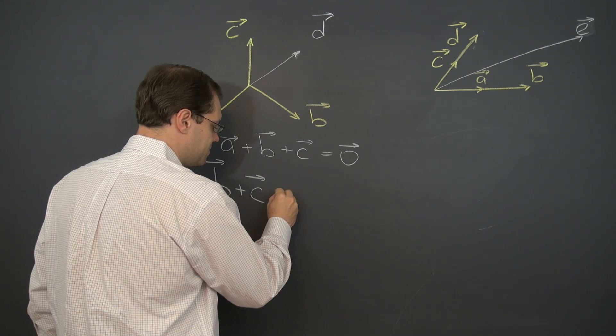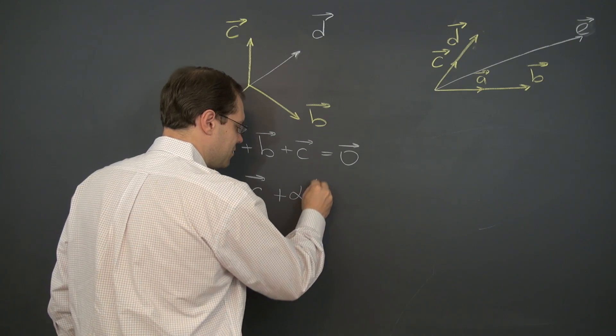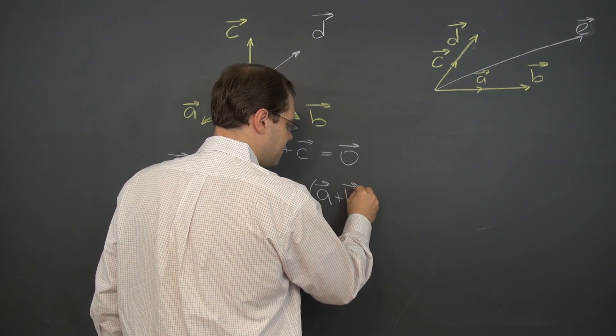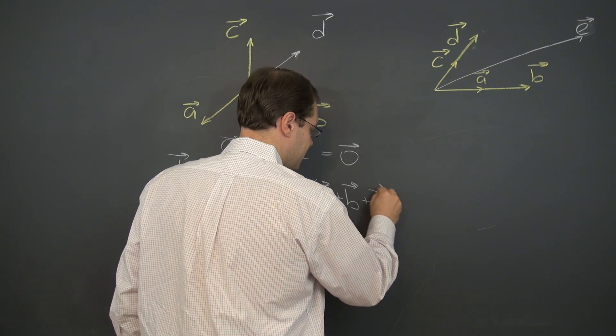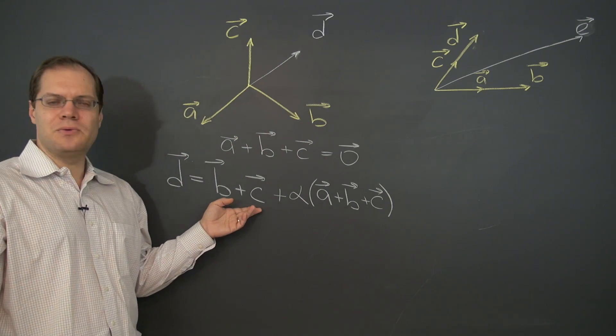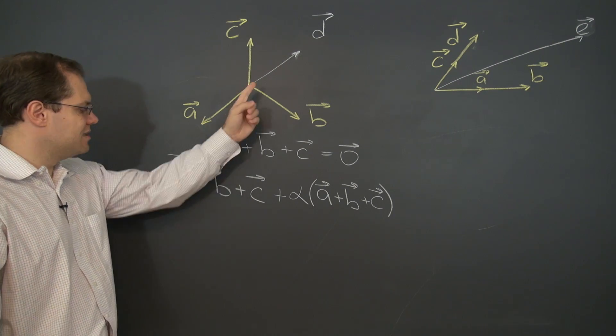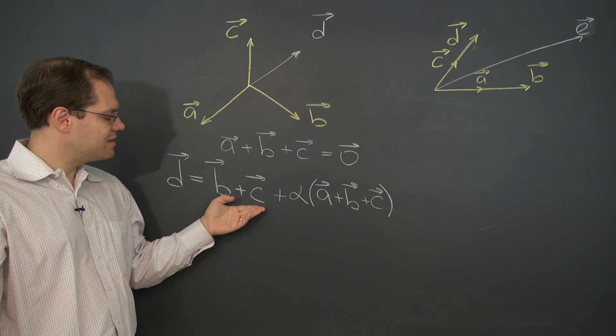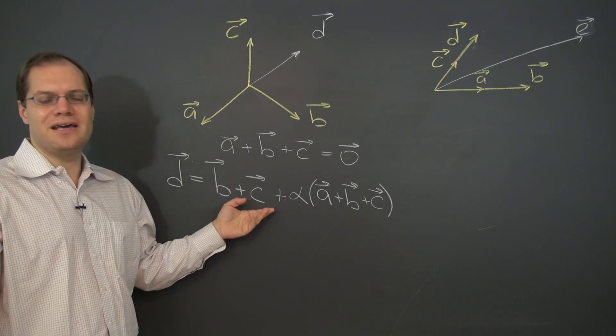And then you can throw in any amount of this fancy zero, a plus b plus c. And there you go. This is all possible ways of expressing d as a linear combination of a, b, and c.